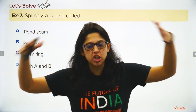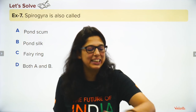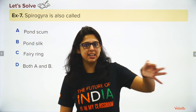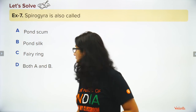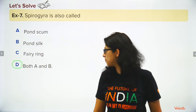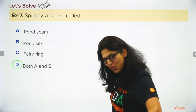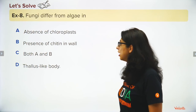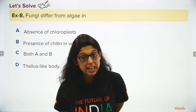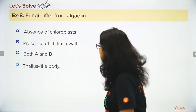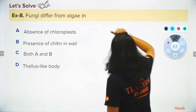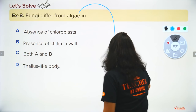Spirogyra is a green carpet seen on ponds — a long cylindrical form of algae, also called pond silk and pond scum. Fairy rings are mushrooms (fungi) that sprout up. Algae is green, chlorophyllous, and its cell wall is made up of cellulose, hemicellulose, and pectin.